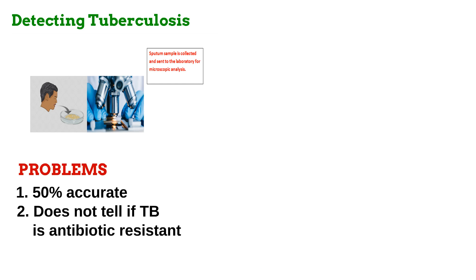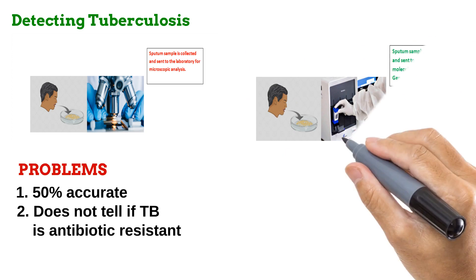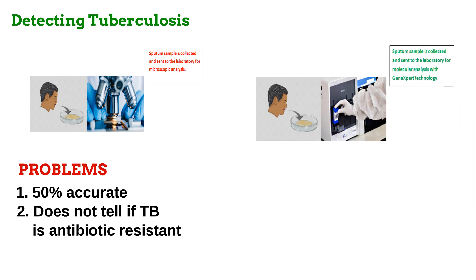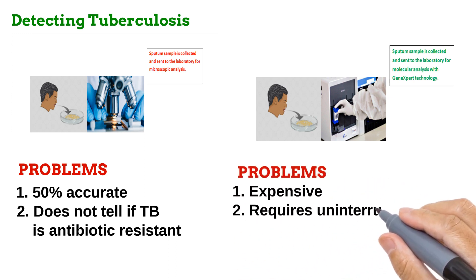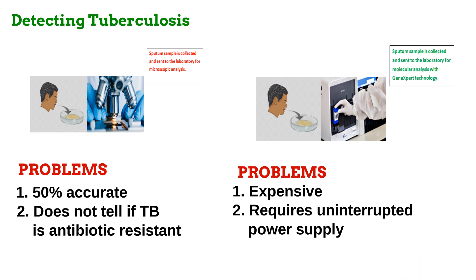These problems of the conventional sputum tests are solved by the Xpert MTB/RIF test, commonly known as GeneXpert. Instead of microscopy, this sophisticated testing method utilizes molecular biology to accurately detect tuberculosis in the sputum of the patient in less than two hours. It also detects if the infection is antibiotic-resistant, in which case alternative drugs are prescribed. However, at the price of about $60,000 for the equipment, GeneXpert is an expensive option which requires an uninterrupted power supply. These problems make it difficult to acquire and use in low- and middle-income countries, where the great demand for tuberculosis tests is matched by little availability of GeneXpert testing facilities.